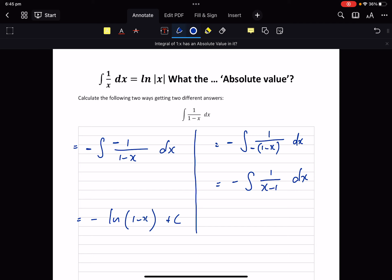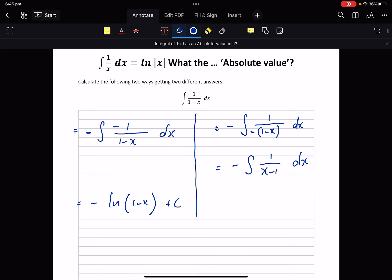That rearranges it so that I'm back in that pattern, the derivative on top of the function, so we get the answer, the natural log of x minus one plus c. We've got one question and we've got two different answers.